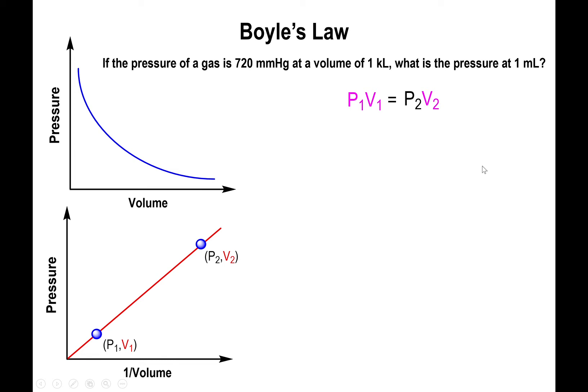You start with P1V1 equals P2V2. Since you're looking for the pressure, you solve for P2, which means you divide both sides by V2. Now you have P1V1 over V2 equals P2.